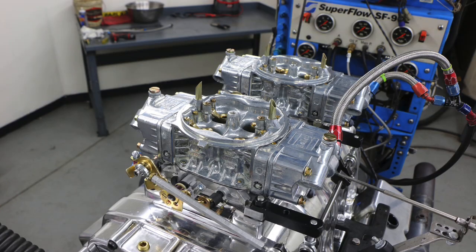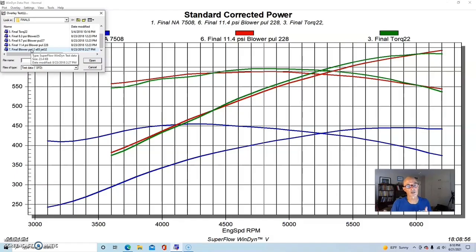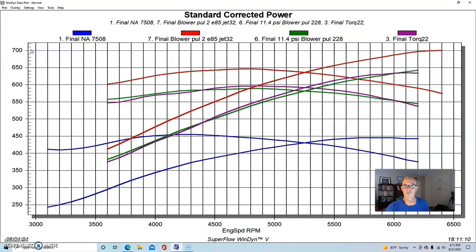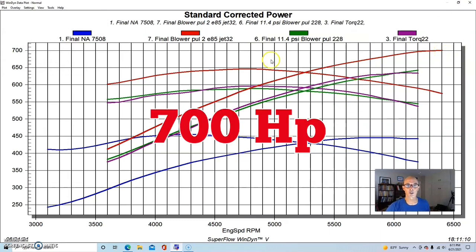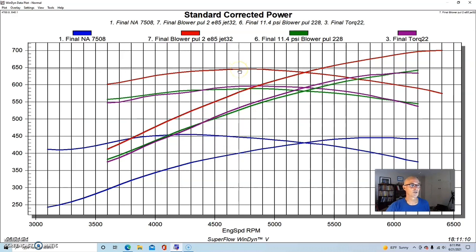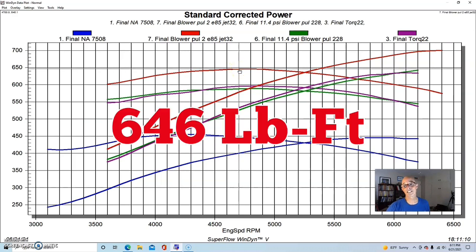We did this by using the same carburetors - we didn't even use E85 carburetors. What we did was just put a ton of jet in it. We basically went from about 76 jets in these twin 750 carburetors up to 99 jets. We just threw all the jet in it to run the E85 and here's what happened. You can see it loved the E85. The peak power was up to 700 horsepower, peak torque was up to 646 foot-pounds of torque.